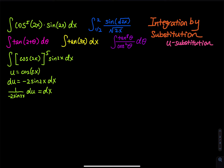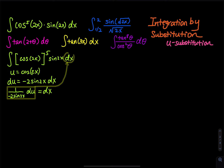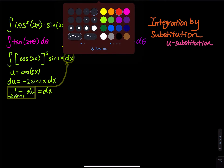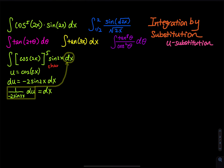The purpose of these steps is to perform a change of variable — we replace dx in the original integral using our expression in du. This step is called the change of variable: we are changing everything from x to u.